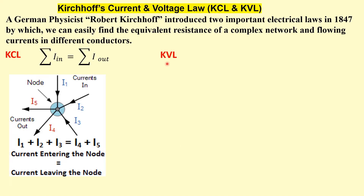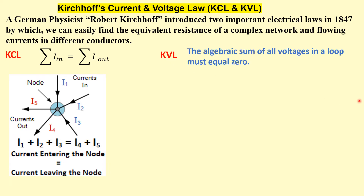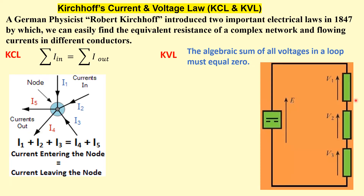Kirchhoff's second law is Kirchhoff's voltage law, which states that the algebraic sum of all voltages in a loop must equal zero. In this loop, if we take the direction as clockwise, then E is positive and V1, V2, V3 are negative. So E minus V1 minus V2 minus V3 equals zero, where V is equivalent to I times R. If we know the resistances and current, we can find the voltage.